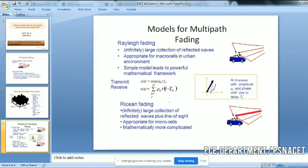Rician has an infinitely large collection of reflected waves and also has a line of sight. This is appropriate for microcells. For Rayleigh fading we can consider macrocells in urban environments because there is no possibility of line of sight in urban environments. In microcells there will be a line of sight signal.